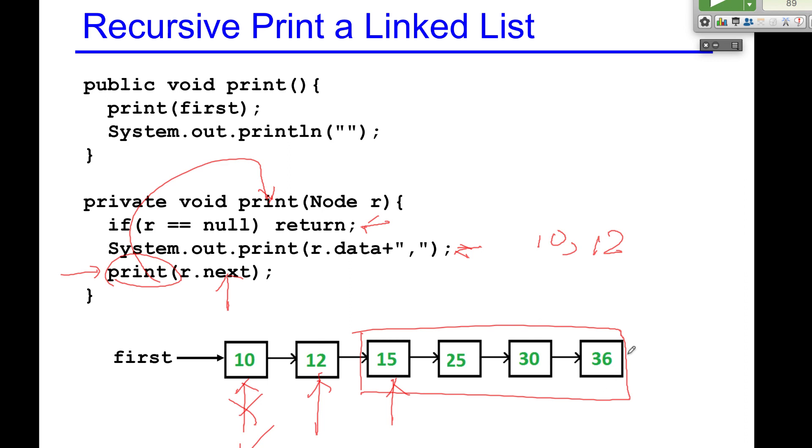When you call this 36, print 36. And 36 next is null. And then it stops.